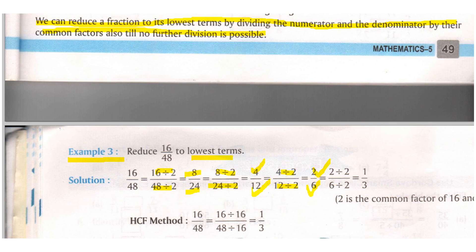For HCF method when you will find the HCF of 16 and 48 the HCF will come as 16 only. So what you will do? You will divide both the numerator and denominator with HCF and you will get the same answer.